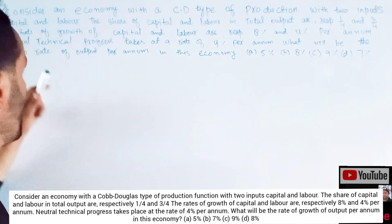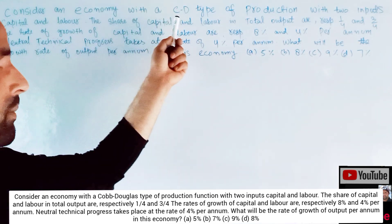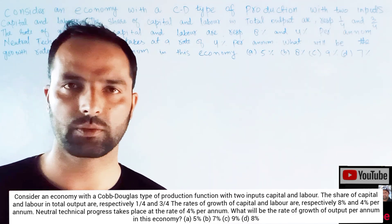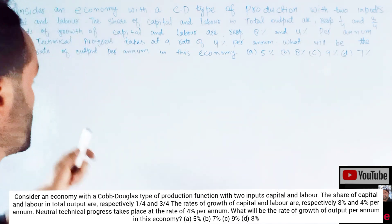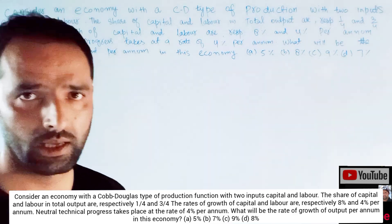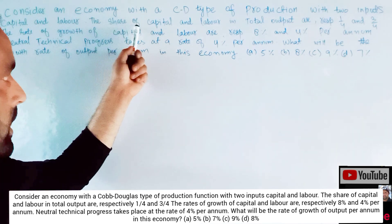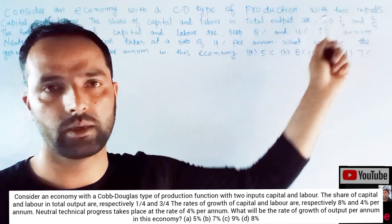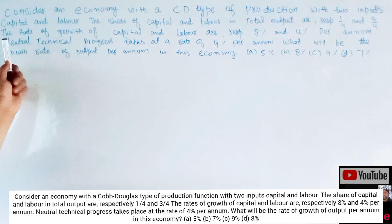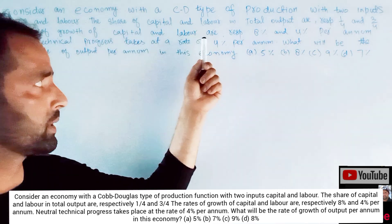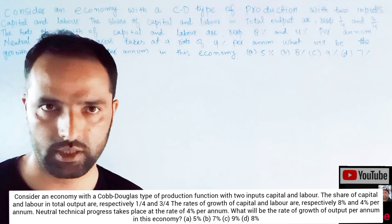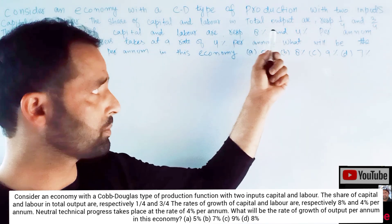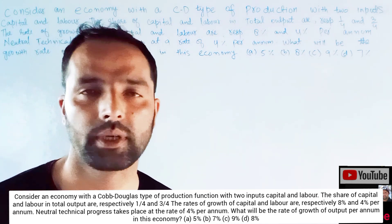The question is like this. Consider an economy with a Cobb-Douglas type of production function with two inputs, capital and labor. We are given the share of capital and labor in total output as 1/4 and 3/4 respectively. The rate of growth of capital and labor are respectively 8% and 4% per annum.